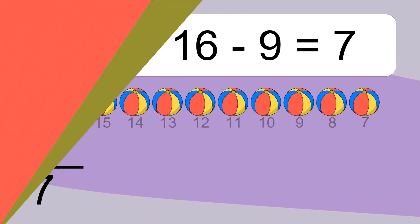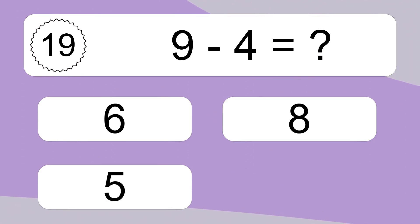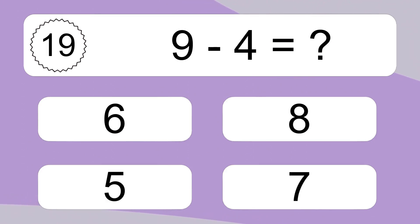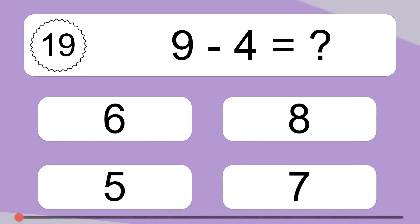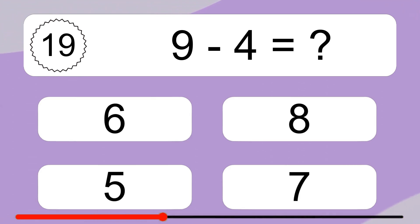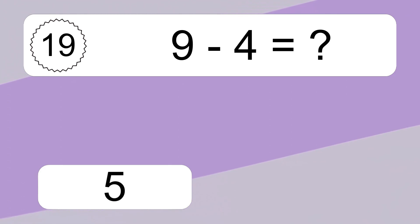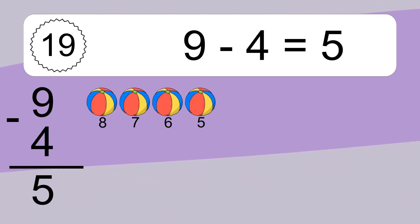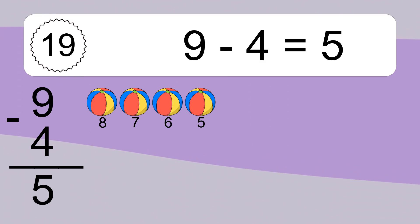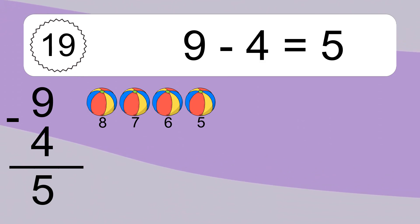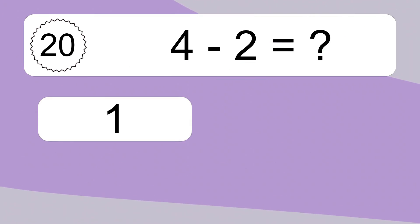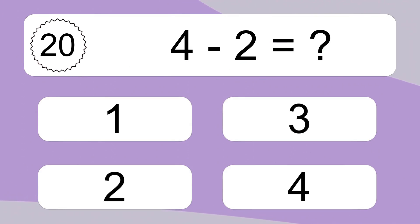9 minus 4 equals what? 9 minus 4 equals 5. Let's count it. 8, 7, 6, 5.